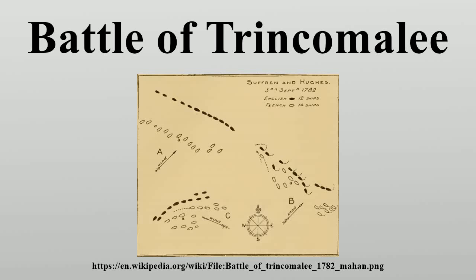The Battle of Trincomale was fought between a British fleet under Vice Admiral Sir Edward Hughes and a French fleet under the Bailli de Suffren off the coast of Trincomale, then Ceylon, on 3 September 1782. It was the fourth in a series of battles fought between the two fleets off the coast of the Indian subcontinent during the American Revolutionary War.